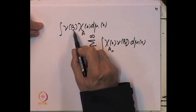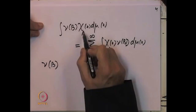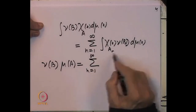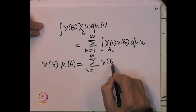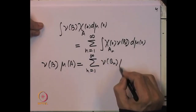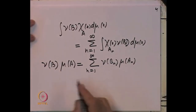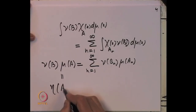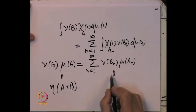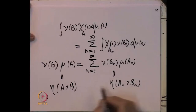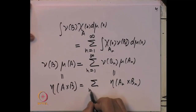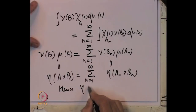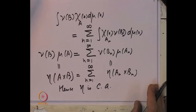On the left, ν(B) is a constant and ∫χ_A dμ = μ(A), so the left side gives ν(B)·μ(A). On the right, ν(Bₙ) is constant and ∫χ_{Aₙ} dμ = μ(Aₙ), giving Σₙ μ(Aₙ)·ν(Bₙ). This means η(A×B) = Σₙ η(Aₙ×Bₙ), proving η is countably additive, hence a measure.